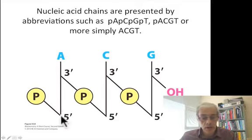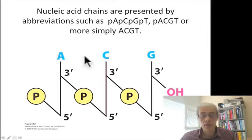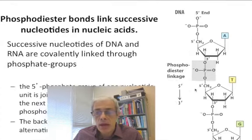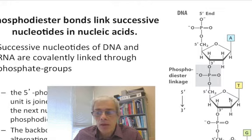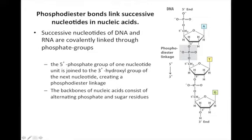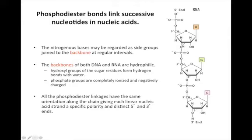The phosphodiester bonds link successive nucleotides to form these nucleic acids. As shown in this figure, the 5' phosphate of one nucleotide is attached to the 3' hydroxyl of the adjacent nucleotide, and this occurs again and again along a strand of DNA. The same is true for RNA, where the 5' phosphate is attached to a 3' hydroxyl. We're now starting to look at the structure of the double helix molecule.